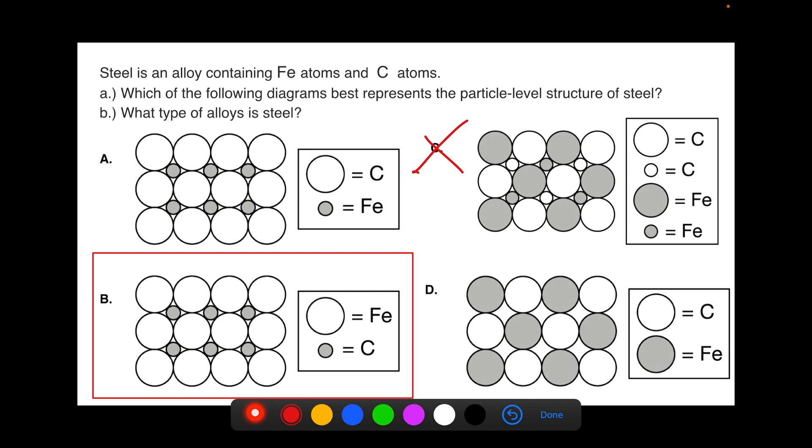In terms of what type of alloy, as we can see the carbon atoms have filled the spaces between the iron atoms. Therefore, we know that this is an interstitial alloy rather than a substitutional alloy.